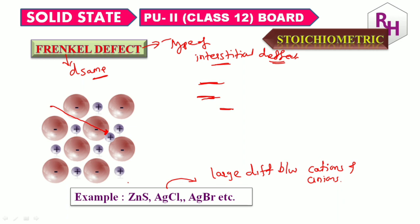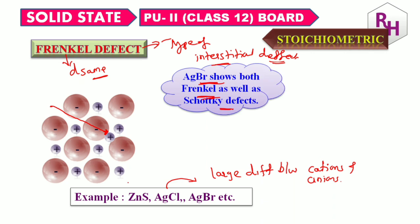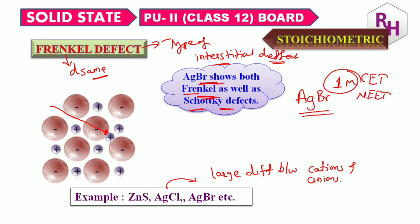This is about stoichiometric defect. AgBr is a very, very important example — AgBr shows both Frenkel as well as Schottky defect. This is a one-mark fixed question, very important even for CET; the question has been asked previously.